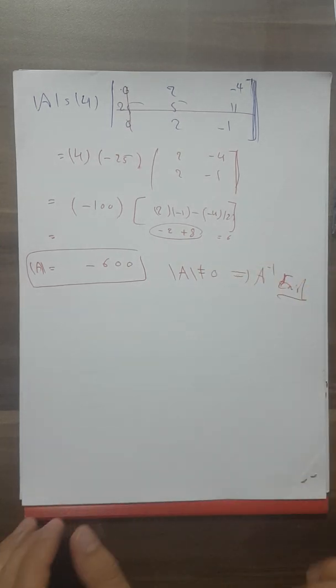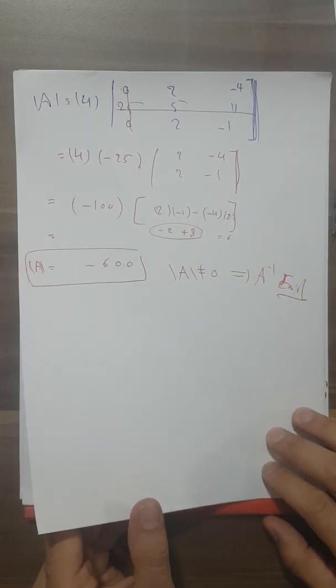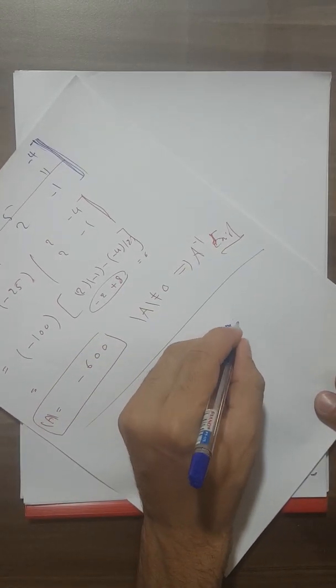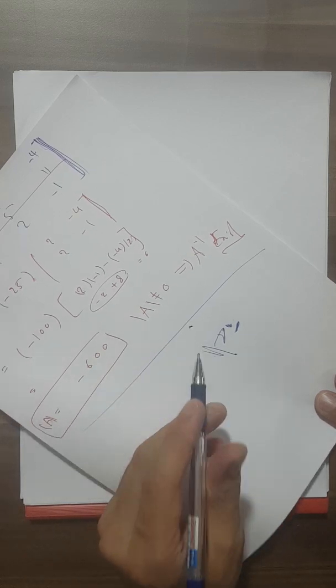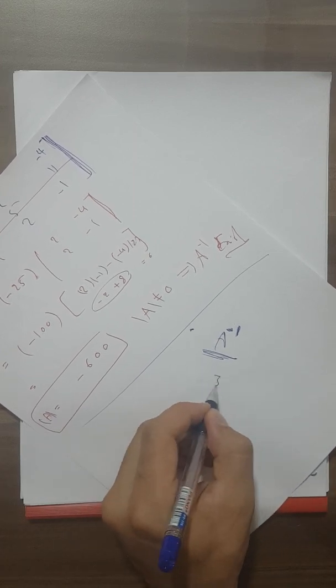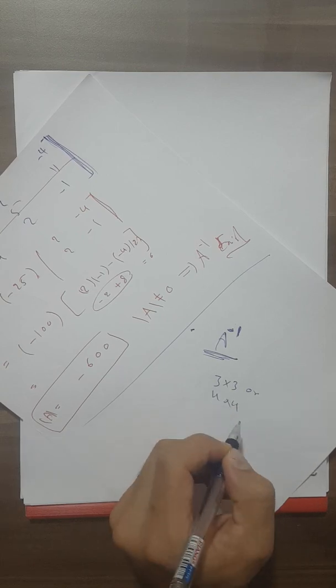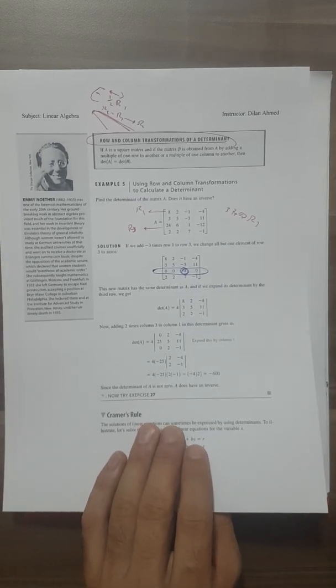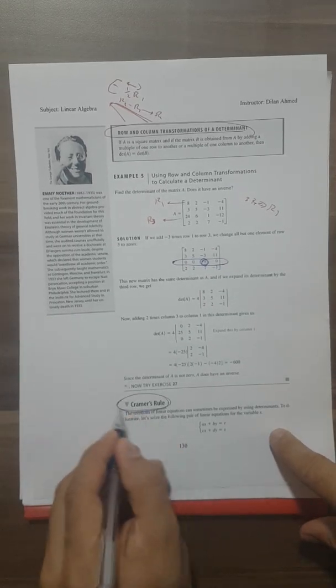That's all — it's not difficult, it just requires more work. Later we will find another way to compute the inverse of 3×3 or 4×4 matrices, which will reduce the work. Now we go back to the two key points and look at Cramer's Rule before finishing this subject.